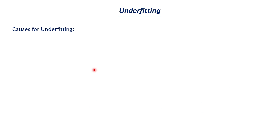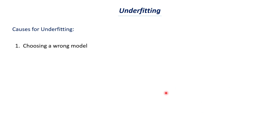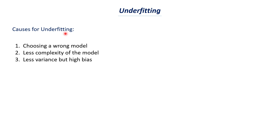Now let's understand what causes underfitting and how we can rectify it. First, choosing a wrong model — in the previous case we needed a parabolic model, but if we chose a linear model it cannot fit this particular data. Choosing the correct model is very important. Second, having a less complex model is another cause. A linear model is very simple whereas a parabola is more complex. If you have a very less complex model, then there is a problem of underfitting — it results in less variance and high bias.